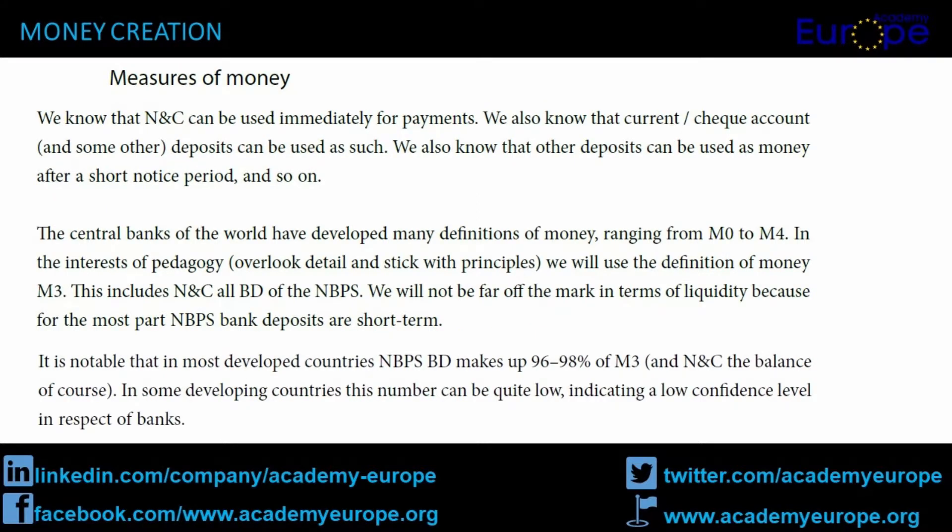Measures of Money. We know that NNC can be used immediately for payments. We also know that current/check account deposits and some other deposits can be used as such. We also know that other deposits can be used as money after a short notice period, and so on. The central banks of the world have developed many definitions of money, ranging from M0 to M4. In the interests of pedagogy, we will use the definition of money M3. This includes NNC and all BED of the NBPS. It is notable that in most developed countries NBPS BED makes up 96–98% of M3, and NNC the balance. In some developing countries this number can be quite low, indicating a low confidence level in respect of banks.